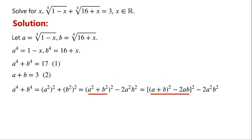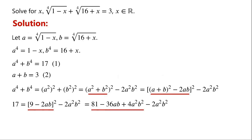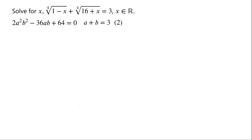So we can write: 17 equals (9 minus 2ab)² minus 2a²b². Expanding (9 minus 2ab)² gives 81 minus 36ab plus 4a²b². Rearranging and simplifying, we have 2a²b² minus 36ab plus 64 equals 0. Dividing by 2: (ab)² minus 18ab plus 32 equals 0. This is a quadratic equation in ab.